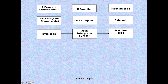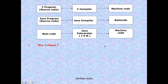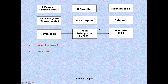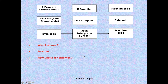Those who are very attentive will have a question in their mind: why do we need two stages in Java? Whatever work is done in C programming in one stage - why does Java need two stages? In one word, the answer is the internet. This two-stage approach is very helpful for the internet. The next question would be: how is the two-stage approach helpful for the internet? Let me remind you of the client-server model first.